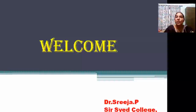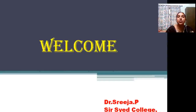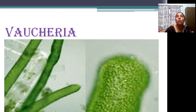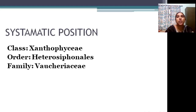Welcome back. We are moving on to our next group. We finished our members of the family Chlorophyceae. Now we are moving on to the next class, Xanthophyceae, and the xanthophycean member Vaucheria. The type Vaucheria belongs to Xanthophyceae, Heterosiphonales, and Vaucheriales.